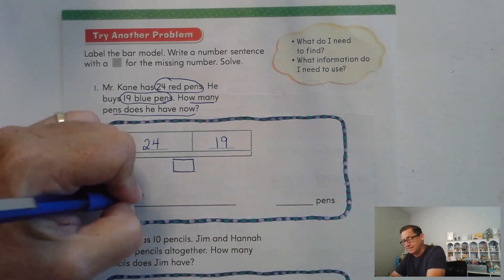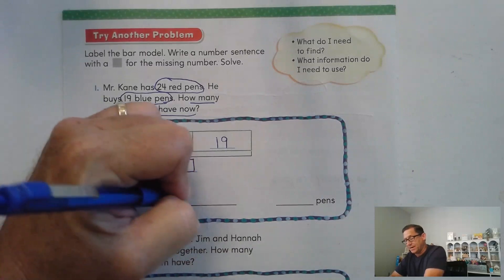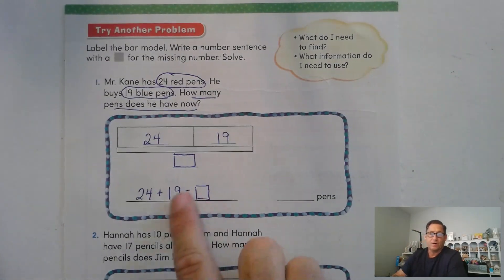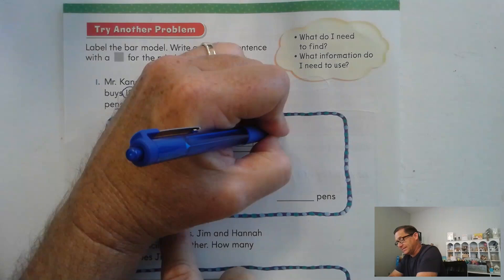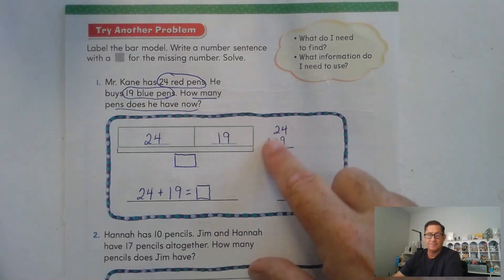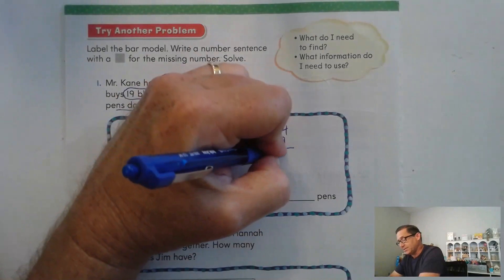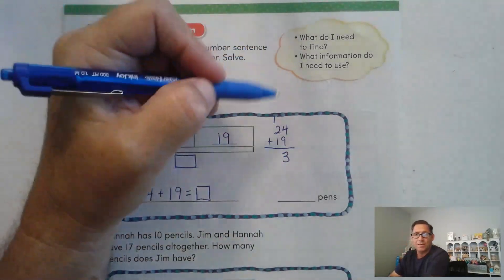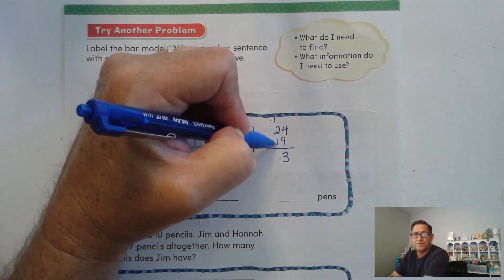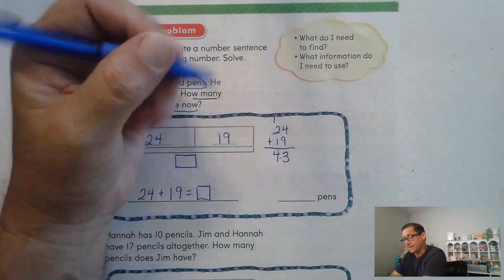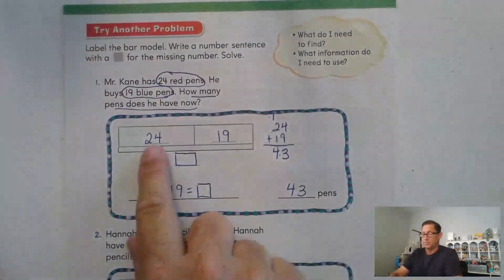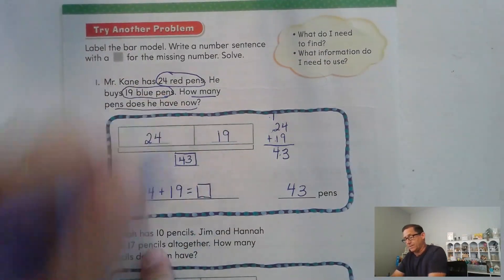What's the number sentence? 24 plus the 19 that he bought will equal some amount. How can we rewrite this number sentence? We can rewrite it like that, lining up the ones, lining up the tens. So 9 plus 4, that's 13, correct? So we have to regroup 10 ones for a 10, leaving us 3 ones. So now add the tens. 2 plus 1 is 3, plus the regrouped 10 is 4. 4 tens is 40. So 43 pens. So if we put these together, it has a combination of 43.